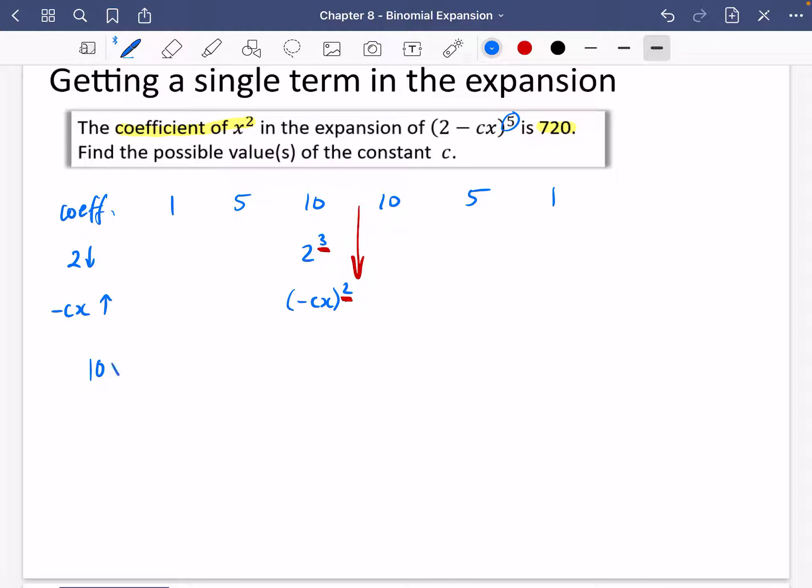So let's actually just do these three that we've got here and work out what it comes to. So I would have 10 times 2 cubed times by minus cx all squared. So that's going to be 10 times 8. That's 80. The negative times the negative would be positive. So I would have 80 c squared x squared. Well, it just says that the coefficient of x squared is 720, which means that this bit that I've got here is the thing that's equal to 720.